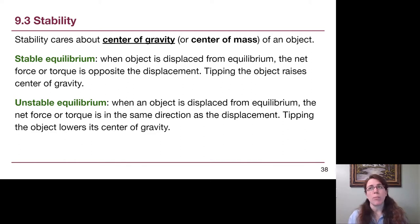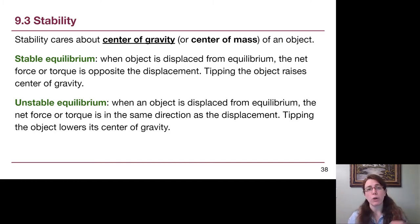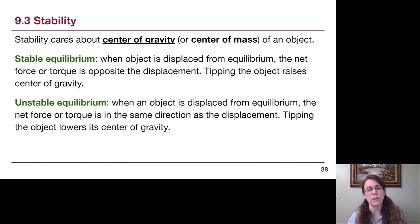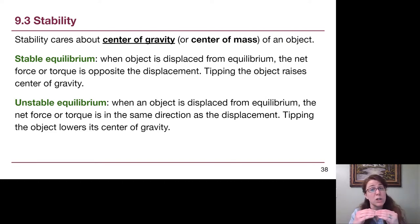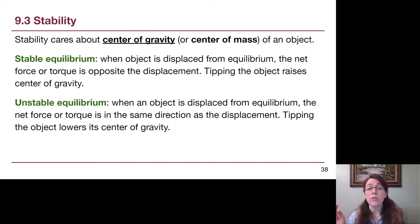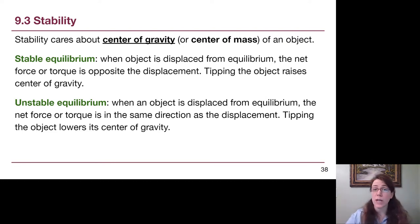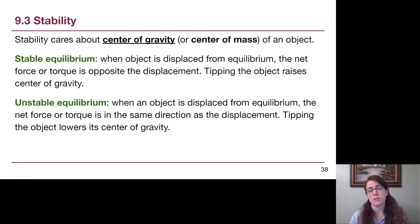The difference between stable and unstable equilibrium relates to what happens when we displace an object. If gravity opposes our displacement — we cause clockwise rotation but gravity causes counterclockwise — that's stable. Effectively, tipping the object raises its center of gravity. In an unstable equilibrium, gravity adds to the same rotation we started, helping knock the object over, and tipping lowers the center of gravity.